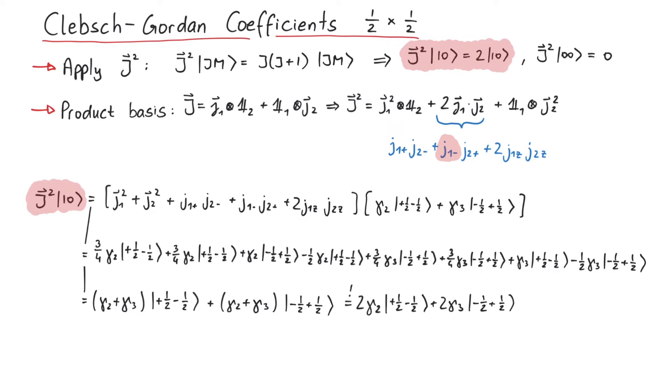As for the state 0 0, we find after a similar calculation a result involving the sum of alpha 2 and alpha 3. Since this should be 0, we see that alpha 2 has to be the negative of alpha 3. Therefore, both of their absolute values have to be 1 over the square root of 2, and their phase should be opposite.